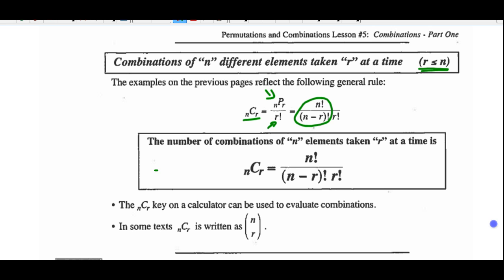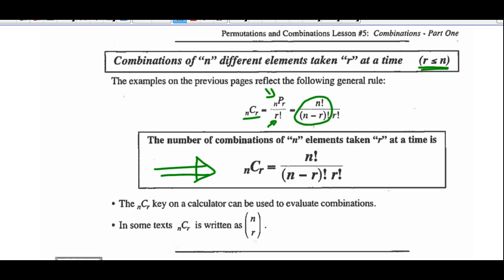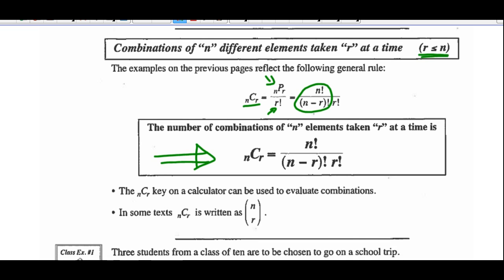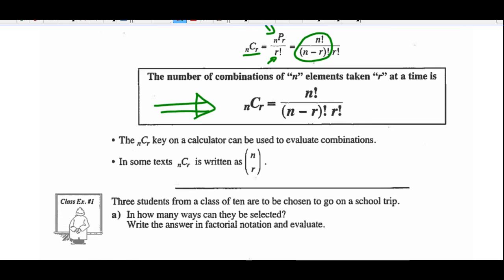So you come up with this combination formula, which is on your formula sheet and you'll have that for the diploma exam. You have to know how to use it — you don't have to memorize it. Note that the nCr key in the calculator can be used to evaluate combinations. Another common way to write combinations is n combinations of r written in that form as well — you may see both.